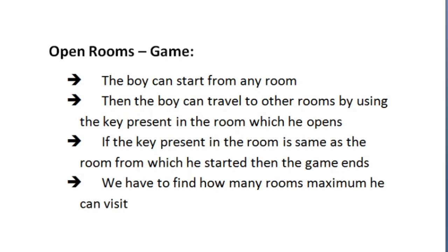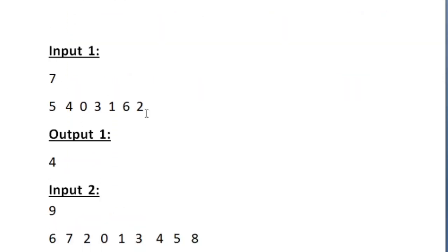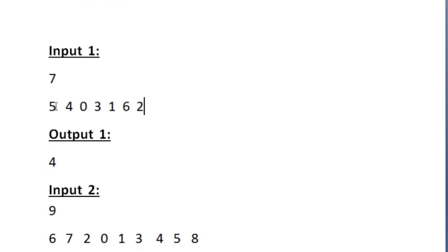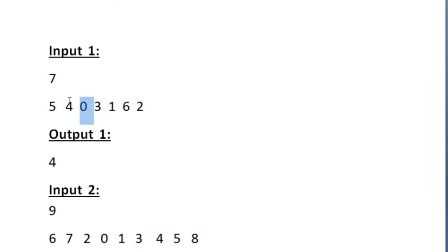Let us see sample input 1. For this input our expected output is 4. Each room has a key for another particular room: the first room has the key for the fifth room, the second room has the key for the fourth room, and the third room has the key for the zeroth room. Like this, every room has the key for some other room.